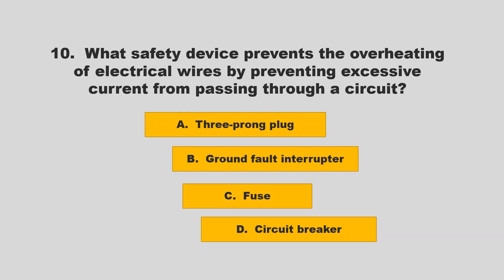What safety device prevents the overheating of electrical wires by preventing excessive current from passing through a circuit? Is it a three-prong plug, ground fault interrupter, fuse, or circuit breaker? If you chose C, fuse, you are correct.